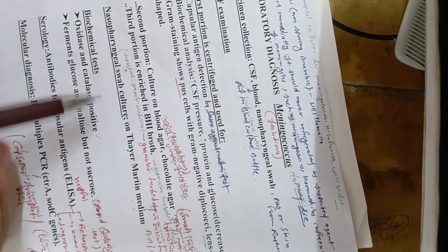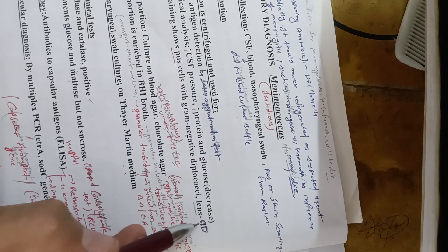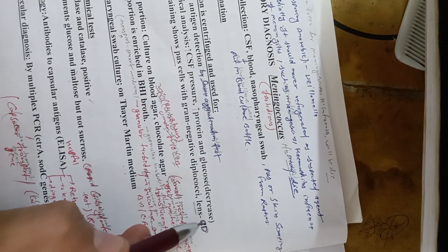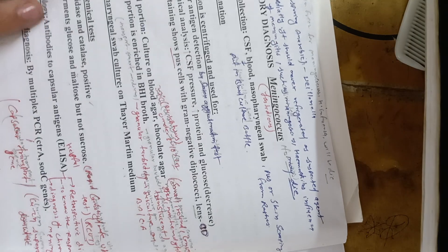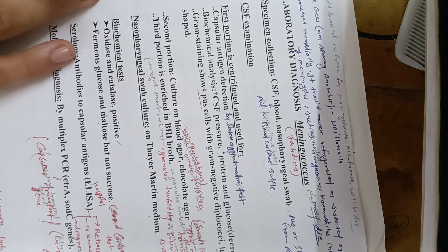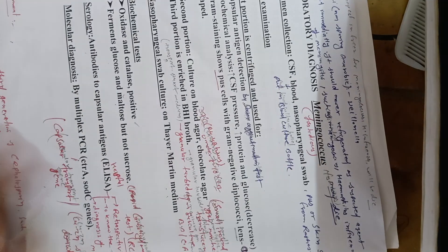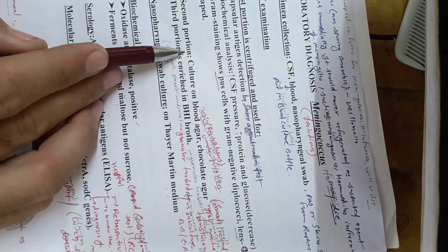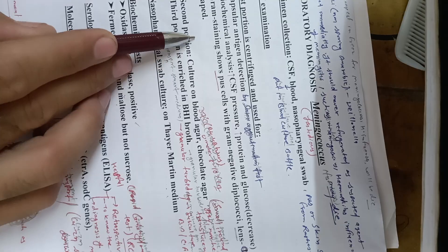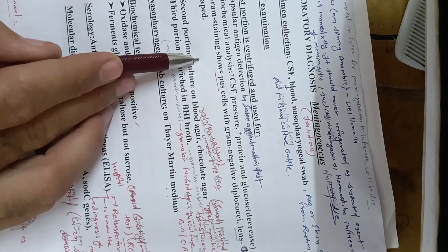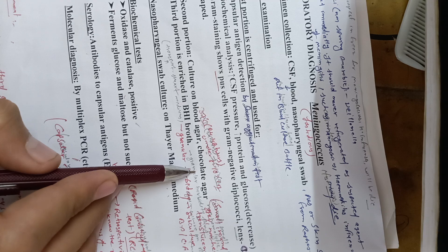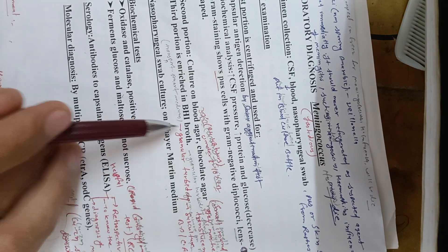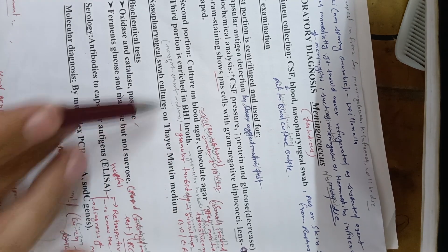The diplococci are lens-shaped, meaning two bacteria with adjacent flat surfaces. The second portion is collected from the pellet and cultured on blood agar and chocolate agar, because meningococcus cannot grow on ordinary media — it is a fastidious bacteria.